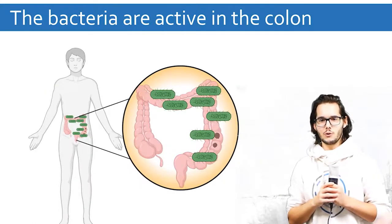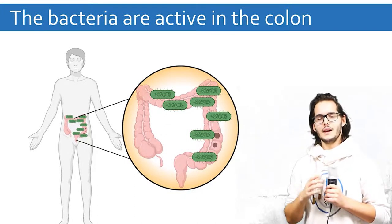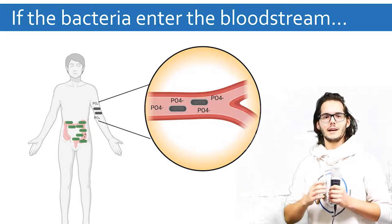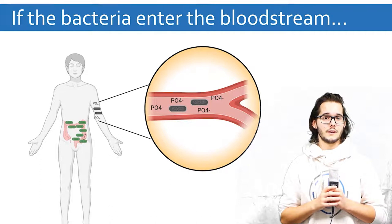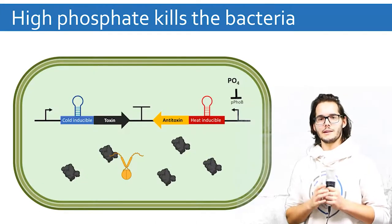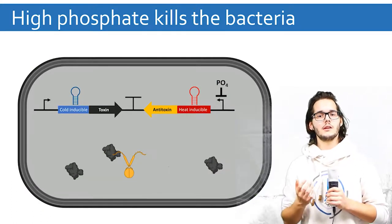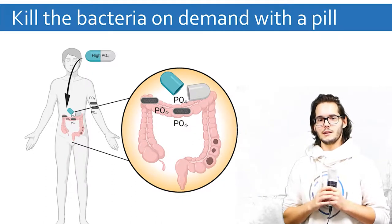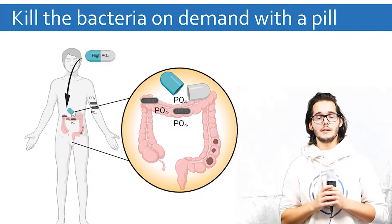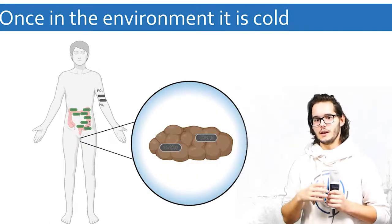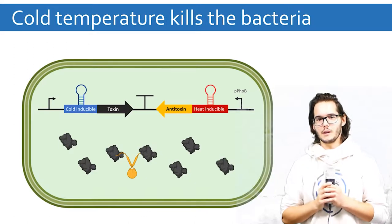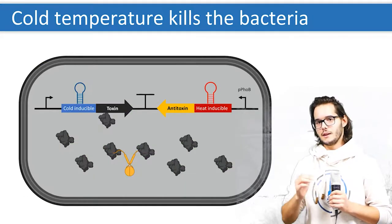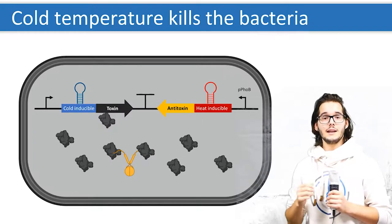In the colon, where the bacteria are fighting the tumor, the environment is warm and low in phosphate. This means that there is enough antitoxin to counteract the effect of the toxin so that our bacteria are still alive. If the bacteria were to accidentally enter the bloodstream, they will encounter high concentration of phosphate. This means that the phosphate promoter would not be active anymore and therefore the antitoxin production is decreased. This causes the toxin to not be neutralized anymore and the bacterium will consequently die. The same mechanism can be used to kill the bacterium on demand by simply giving the patient a pill that releases phosphate in the colon. This is useful when the therapy is over and the GMO wants to be removed from the colon. And finally, once our bacterium gets out of the body, it will be in the wastewater environment which is colder than the body. This means that the thermosensors will invert the balance of toxin and antitoxin thereby leading again to the death of the bacteria.